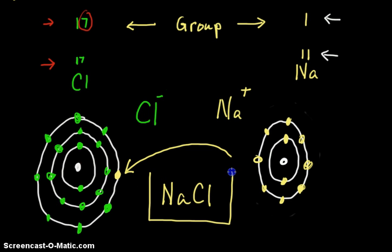A positive and a negative attract, so we end up with sodium chloride — better known as salt. Knowing the valence electrons and being aware of the outer shell can be really helpful later on in high school chemistry. I wanted to point out the importance of valence electrons and connect what they have to do with bonding, molecules, and the periodic table. Thanks for watching.